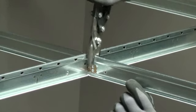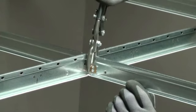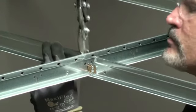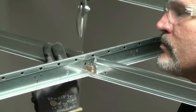To begin the installation of the USG DH-4 seismic separation joint clip, it is necessary to cut the cross T clips that intersect the main T.